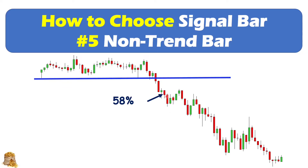After the market goes down a little bit, we see another pullback with this bull bar, and then the next bear bar. The body accounts for 32% of the whole candlestick. If you put your order at the bottom, you can see it's not even triggered, and then there are two consecutive bull bars after it. So this bear bar is not a very good signal bar.